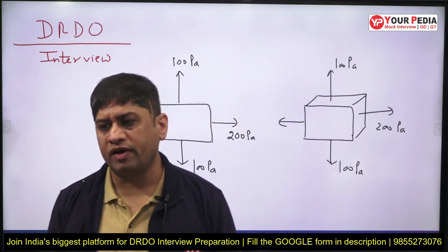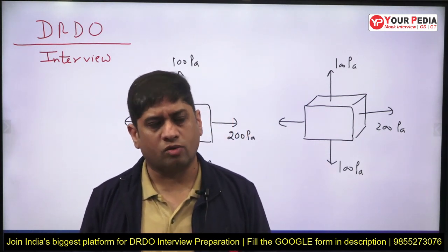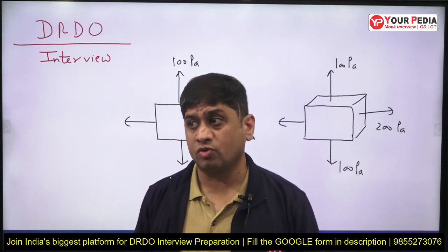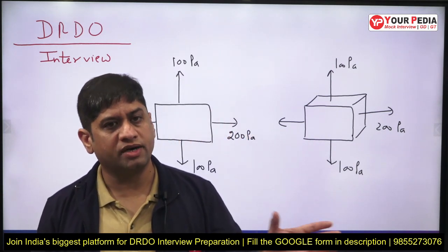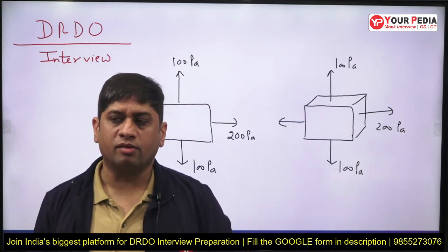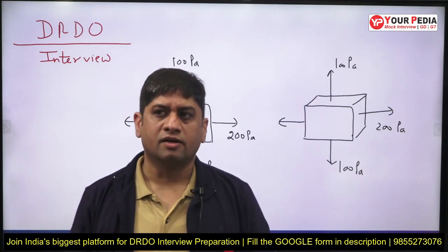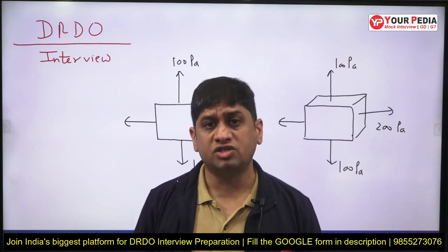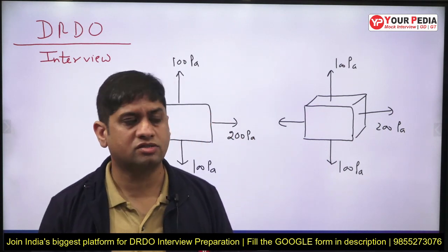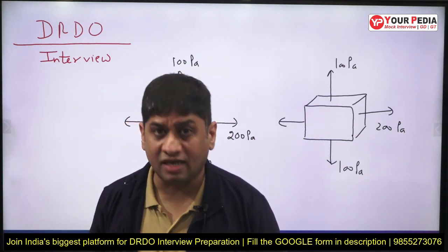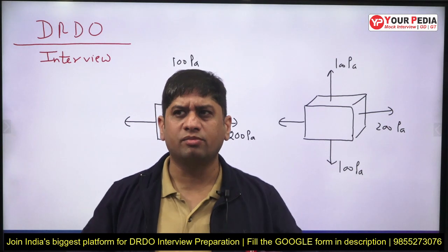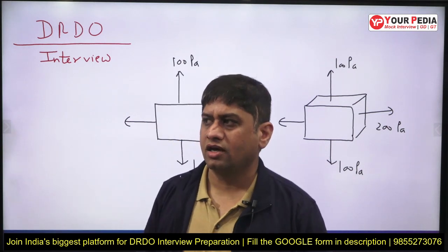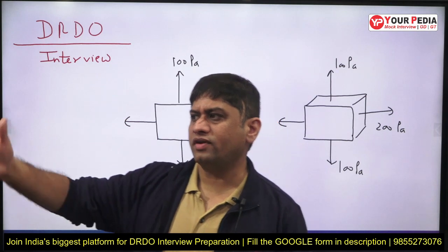Failure depends on what kind of material it is — brittle or ductile. Brittle materials are good in shear and have better shear strength compared to ductile materials, whereas ductile materials fail in the shear mode. That is the reason we also need to calculate the shear stress, which leads us into Mohr's circle.